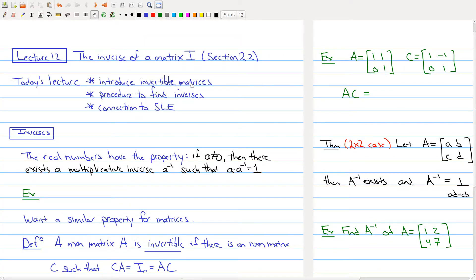Let's jump right in and start talking about the inverse of a matrix. We're going to use as our starting point the fact that the real numbers have a property that we use almost all the time. Namely, if you have a non-zero real number, then there exists a multiplicative inverse a inverse such that a times a inverse equals one. What this is saying is that I can find a number that I can multiply my original number by to get to one.